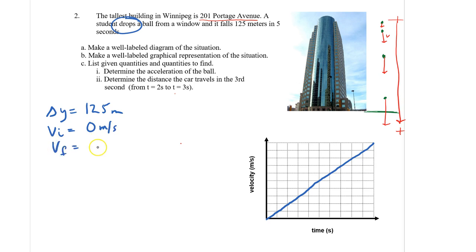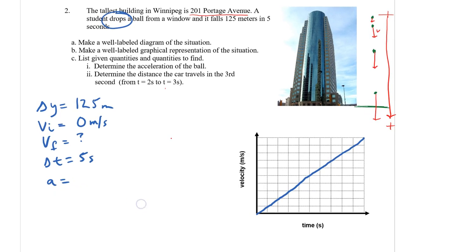The final velocity, I don't know what it is. Anything else that we know? Oh, it takes five seconds. So the time is five seconds. Remember there's five things. The other one that we don't know is acceleration. So let's label as much as we can on here. We know this is going to be five seconds. The initial velocity is zero.